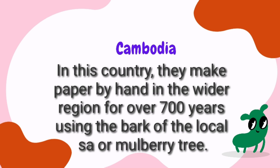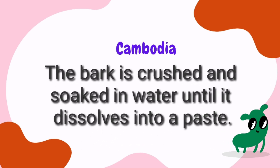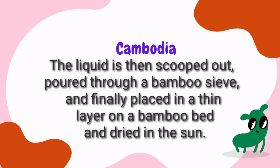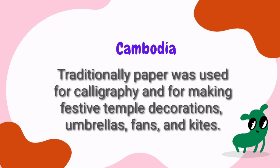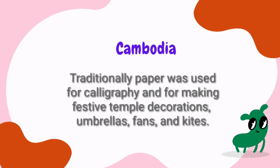Let's learn the arts and crafts of Cambodia. In this country, they have been making paper by hand in the wider region for over 700 years, using the bark of the local mulberry tree. The bark is crushed and soaked in water until it dissolves into a paste. The liquid is then scooped out, poured through a bamboo sieve, and finally placed in a thin layer on a bamboo bed and dried in the sun. Traditionally, paper was used for calligraphy and for making festive temple decorations, umbrellas, fans, and kites.